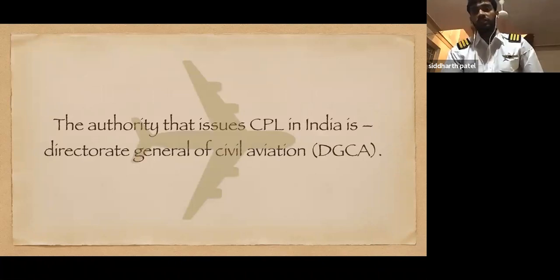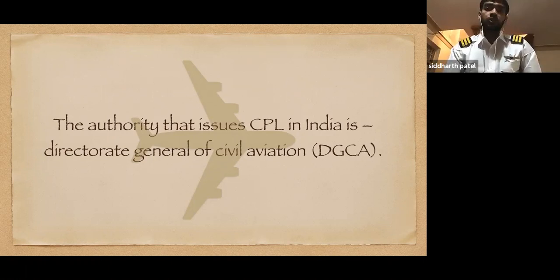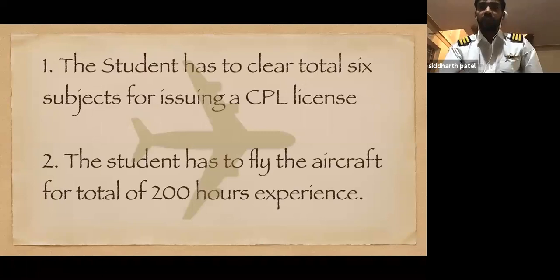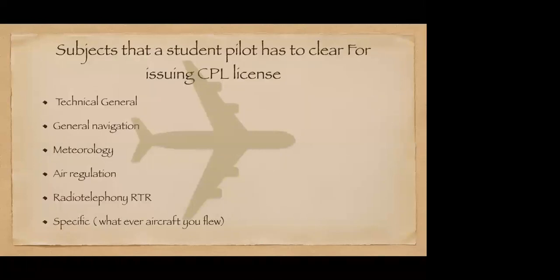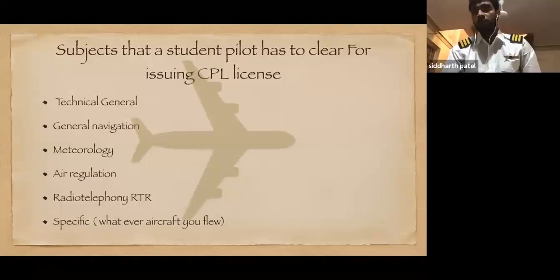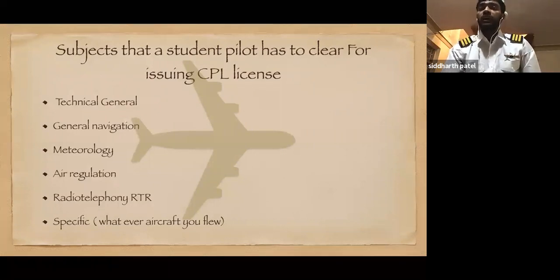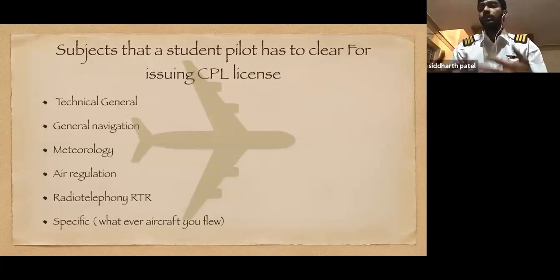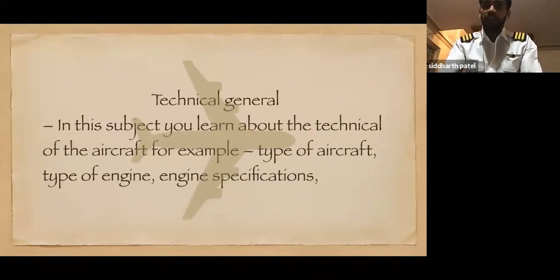To issue a CPL license, the issuing authority is the Director General of Civil Aviation, which is the DGCA. This authority is also responsible for conducting the examination for all CPL students. For the CPL there are six subjects: Technical General, General Navigation, Meteorology, Air Regulations, Radio Telephone which is the RTR, and Specific. Once you clear all six subjects and complete 200 hours of flying, you submit your documents to the DGCA and they will issue your CPL.